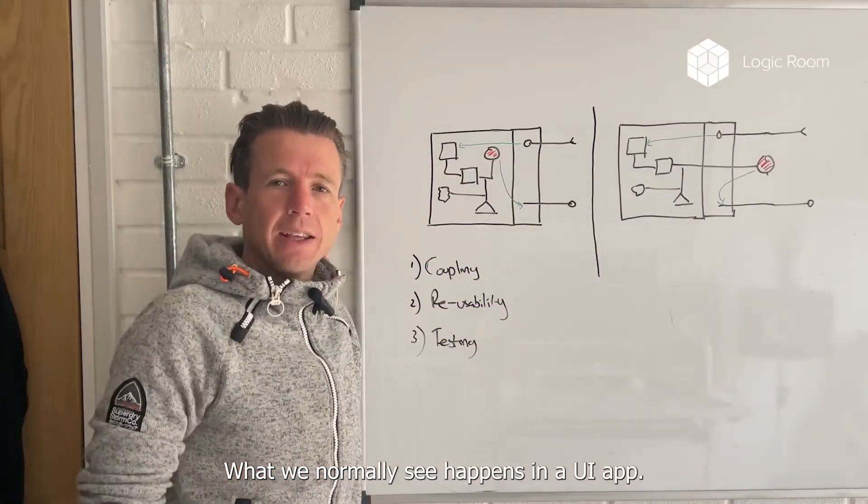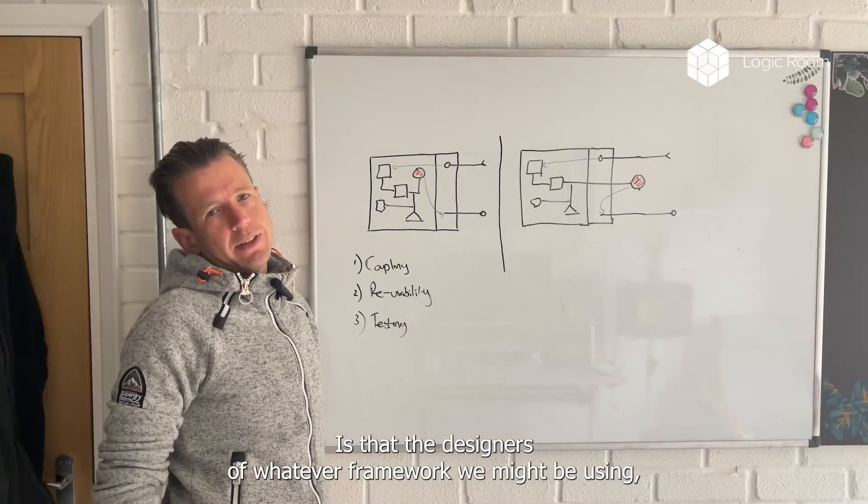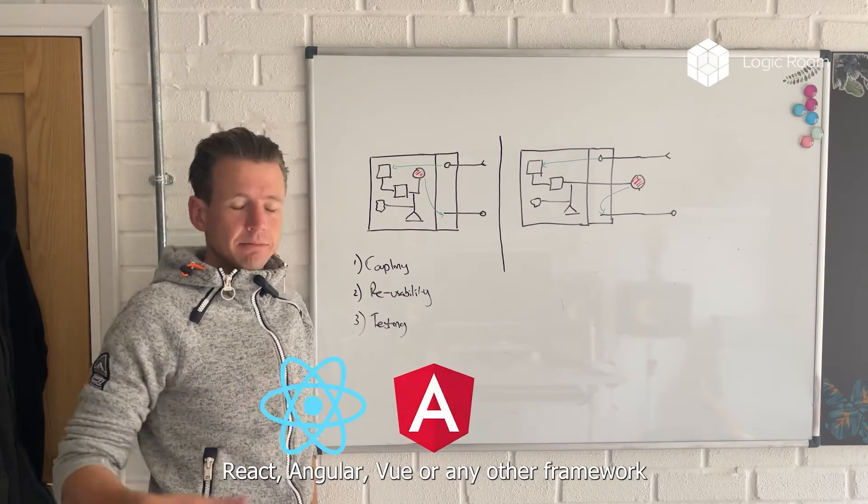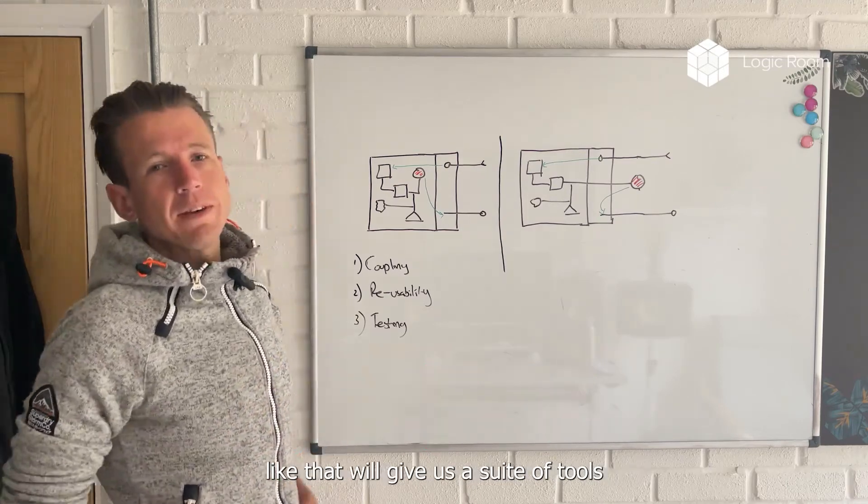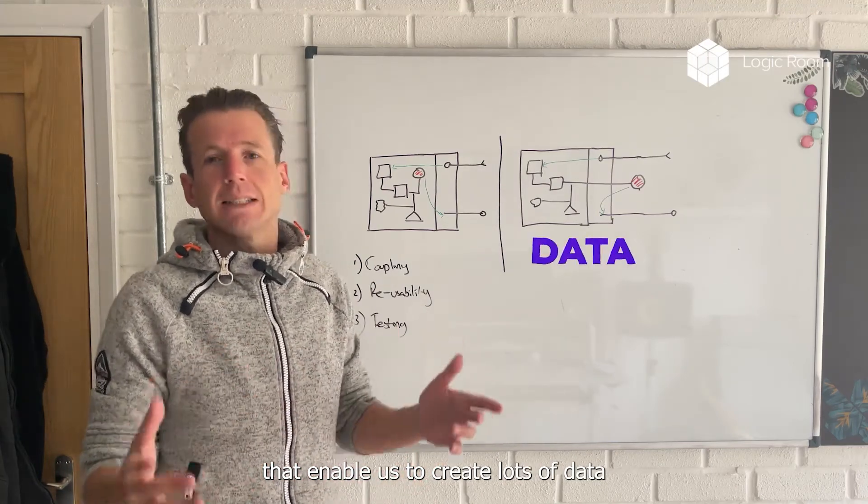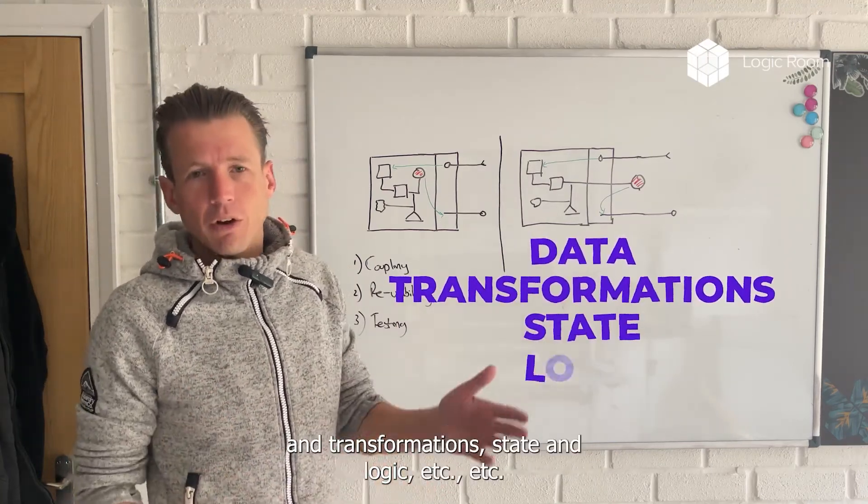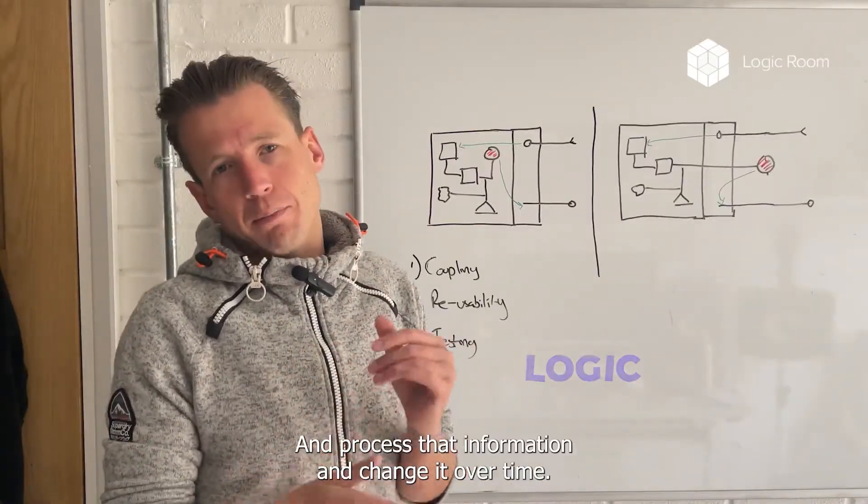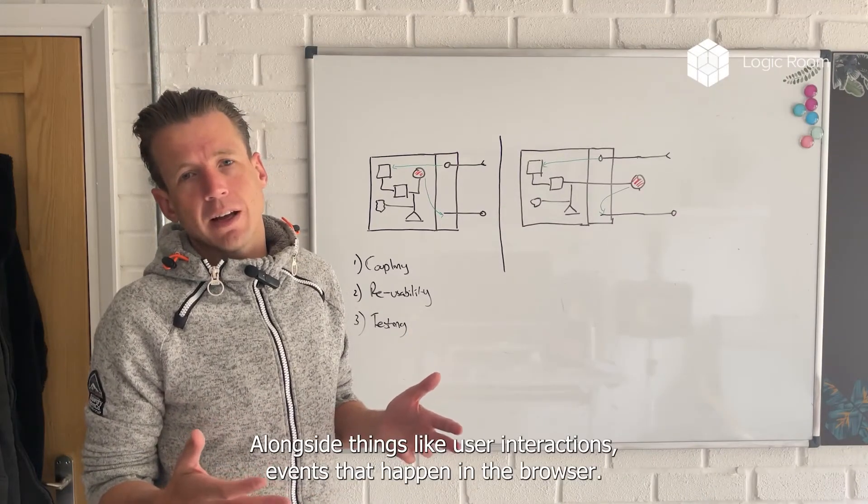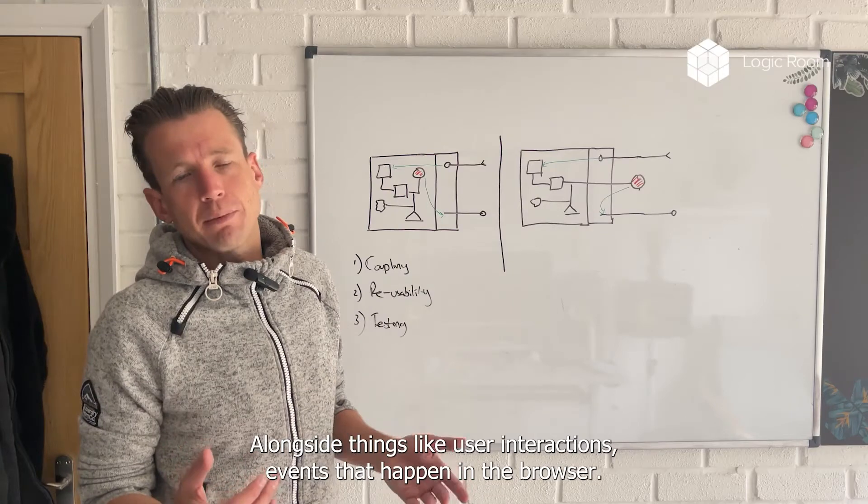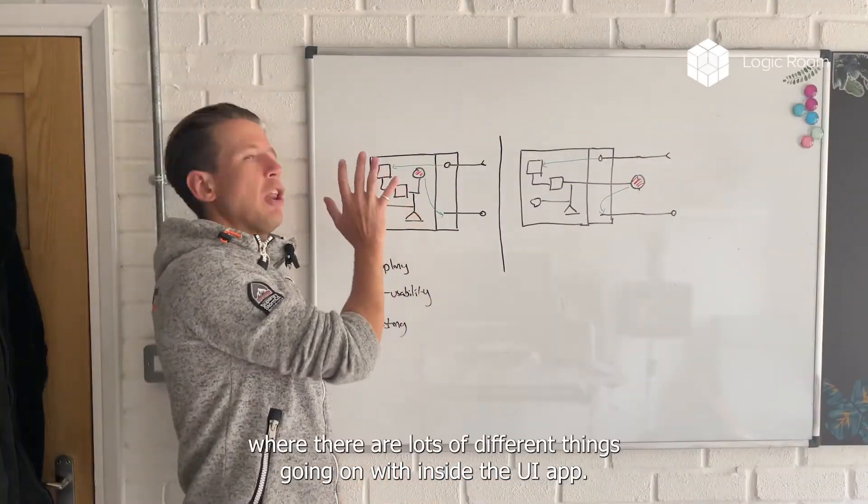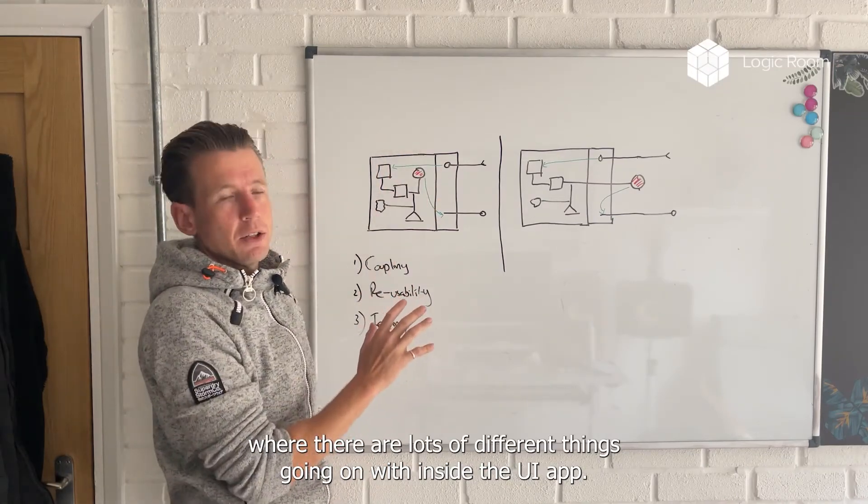What we normally see happens in a UI app is that the designers of whatever framework we might be using - React, Angular, Vue, or any other framework - will give us a suite of tools that enable us to create lots of data, transformations, state, and logic. We put these things together and process that information and change it over time alongside things like user interactions, events that happen in the browser, and stuff that happens inside the framework itself. We end up with this situation where there are lots of different things going on inside the UI app.